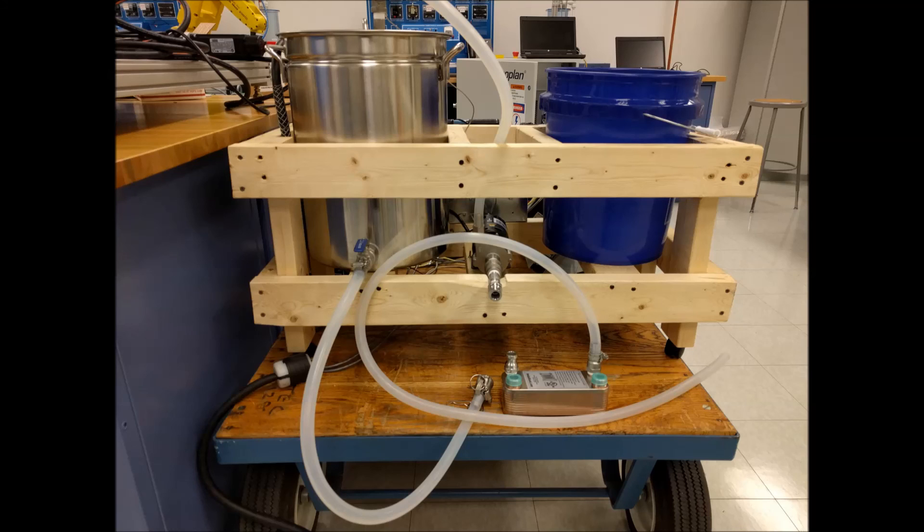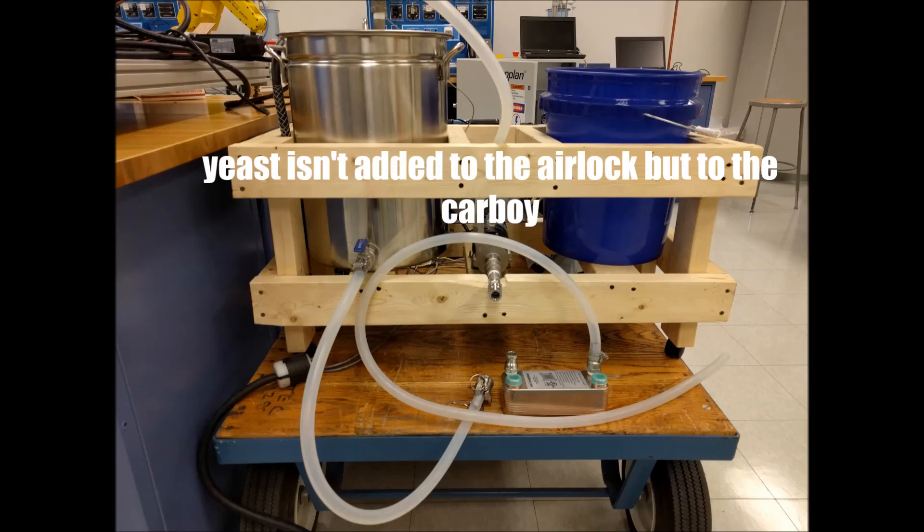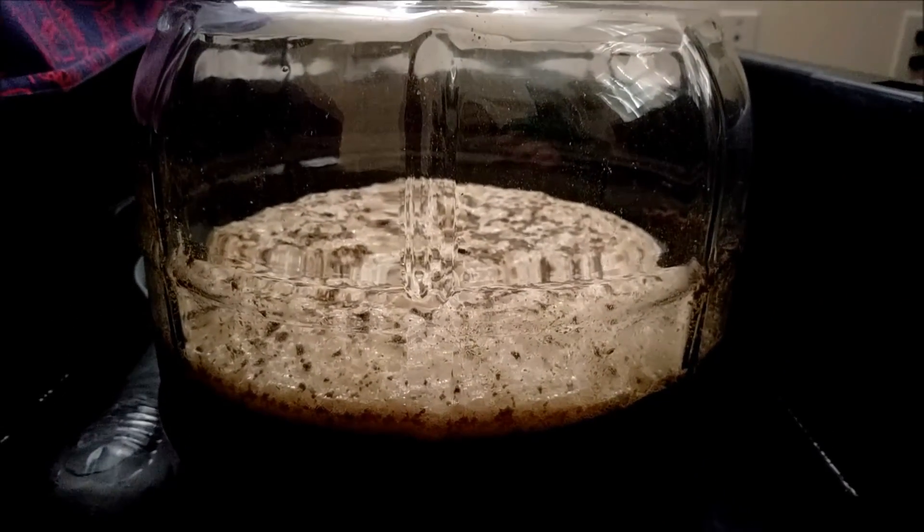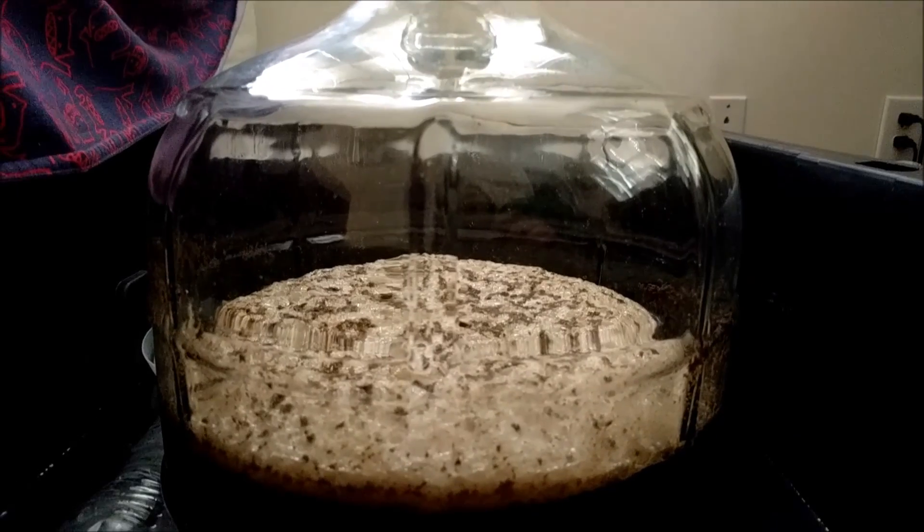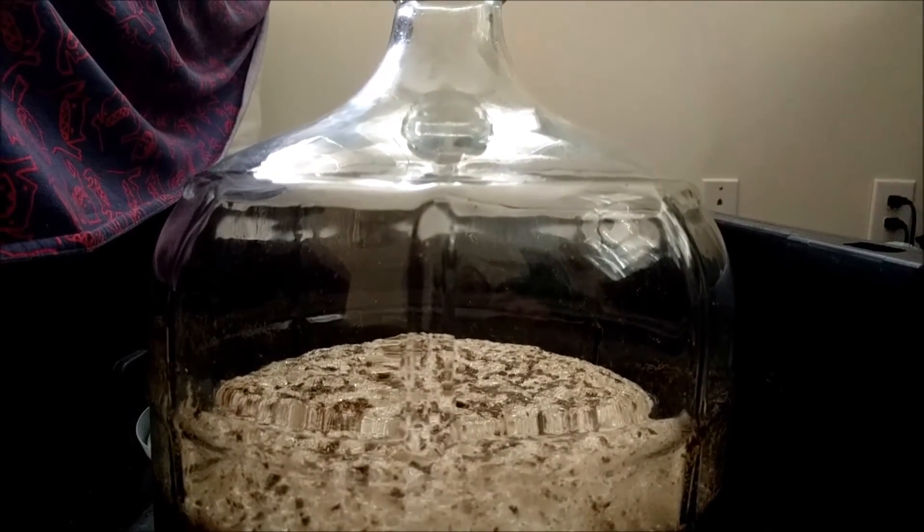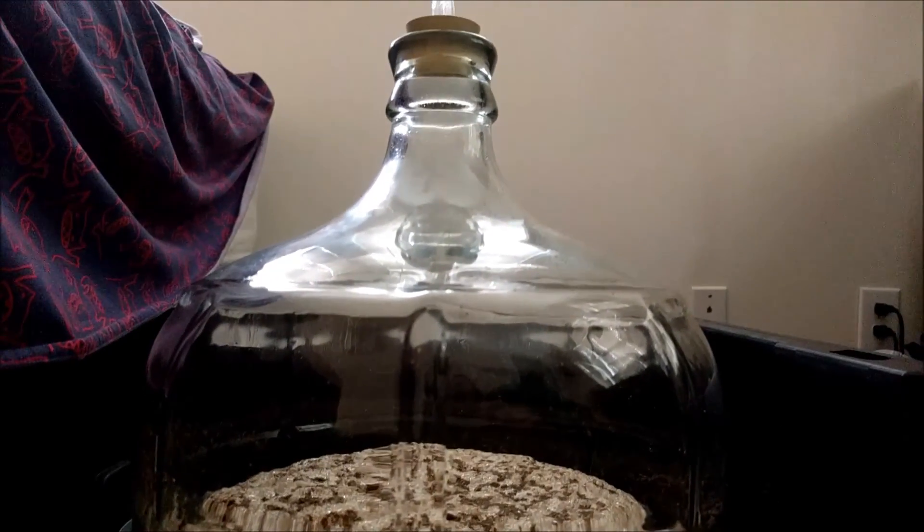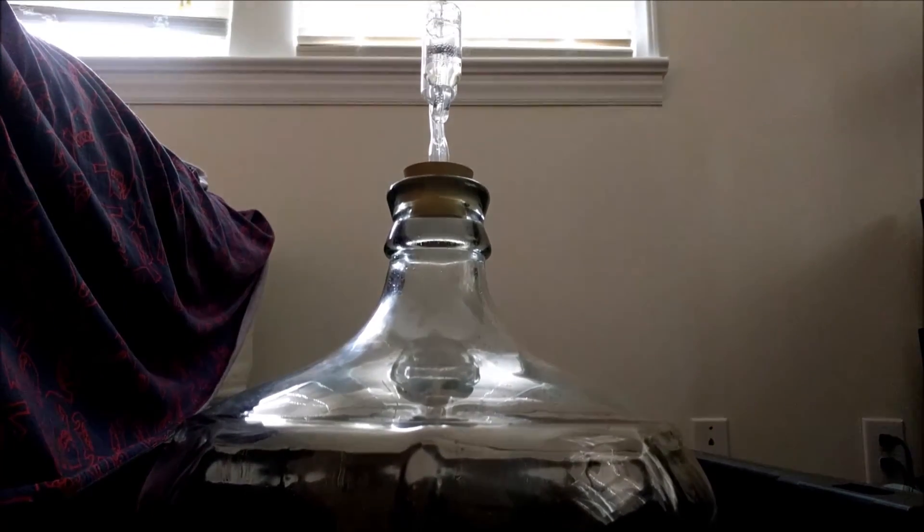Lastly, the yeast is added to the airlock and inserted in the lid, sealing it from contaminants and allowing the CO2 to exit the carboy. In a few hours, the start of the fermentation is visible and the CO2 bubbles from the carboy through the airlock.